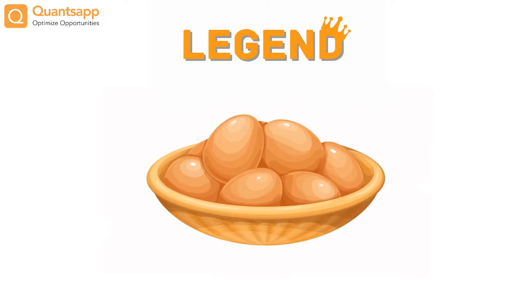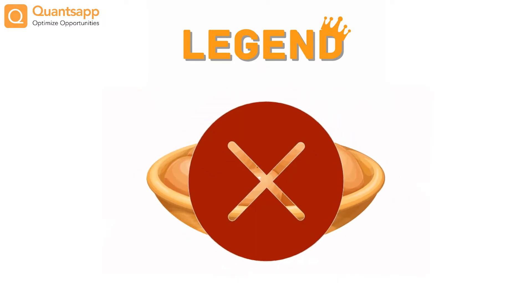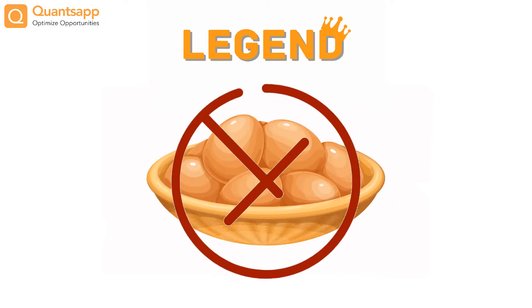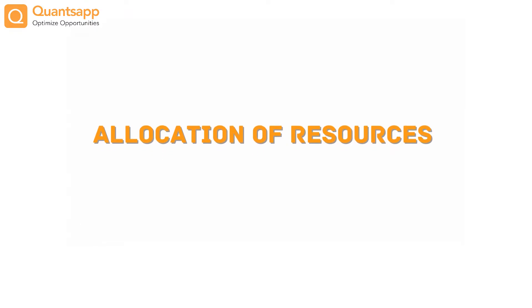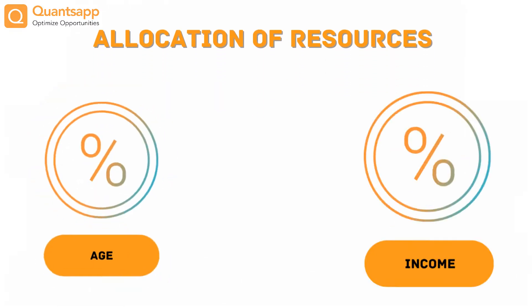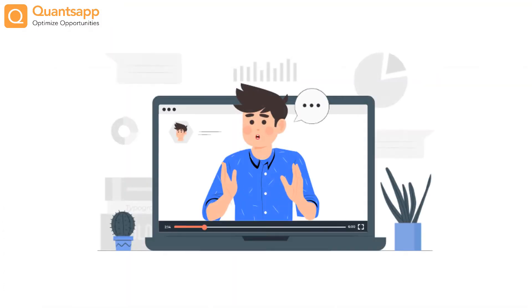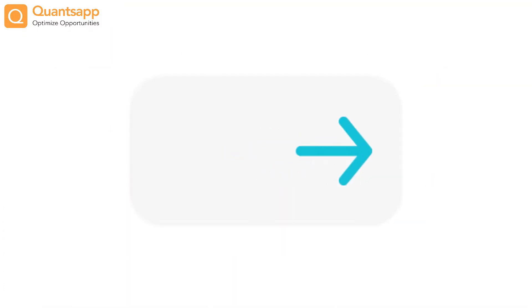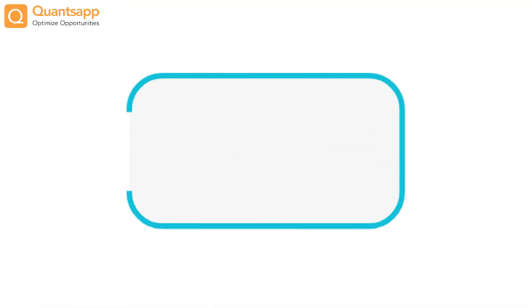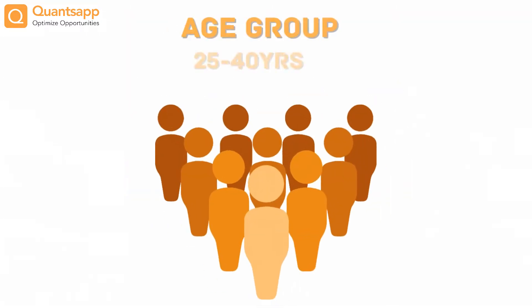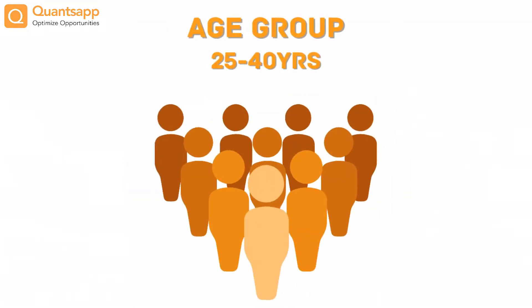Legend has it, never put all your eggs in the same basket. The percentage of allocation of resources is affected by various factors such as age, dependency, income and many others, which we will discuss in the upcoming sessions. The discussed allocation in this video is as per the age group from 25 to 40 years.